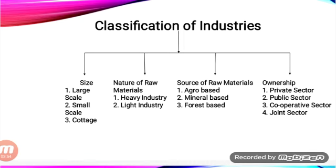The industry also accounts for 2% of GDP — gross domestic product, which is the value of final goods and services produced within the country's territory during a particular period of time, mostly one year. Additionally, 15% of the country's export earnings come from the cotton textile industry.